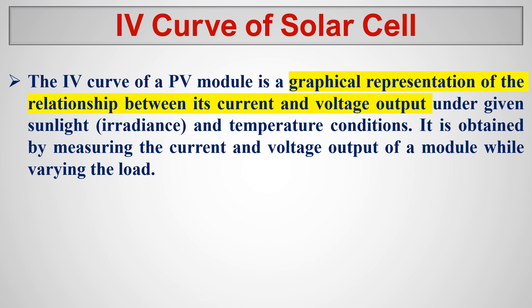The IV curve is a graphical representation of the relationship between the current and voltage output under given sunlight and temperature conditions. It is obtained by measuring the current and voltage output of a module while varying the load. By changing the load, we get different current and voltage outputs, and if we draw the graph of those different values, we get the IV curve.